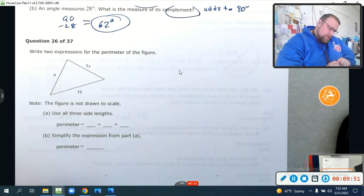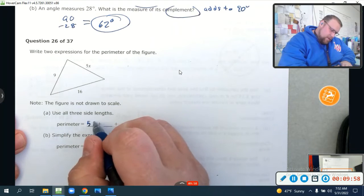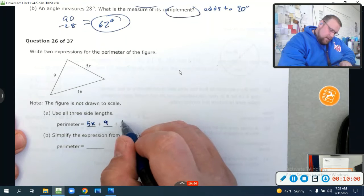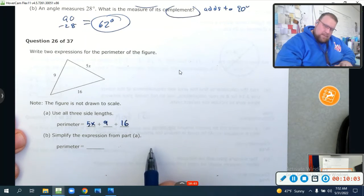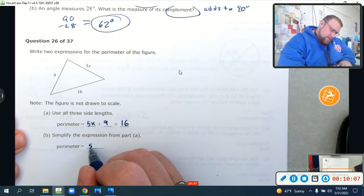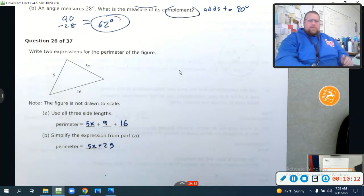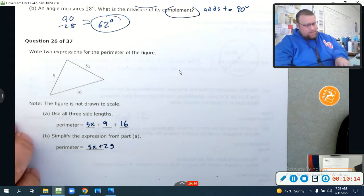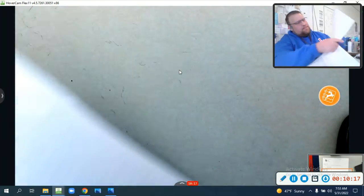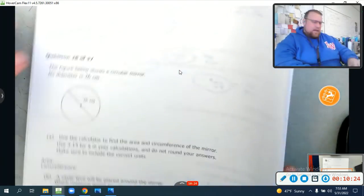Write two expressions for the perimeter of the figure. So, first of all, the perimeter is going to be 5X plus 9 plus 16. I just add up all the sides. And then I'm going to simplify it. When I simplify it, 9 plus 16 is 25, so this is 5X plus 25. That's all it means by two expressions. There are two different expressions. One simplified. It's a little bit longer of a section. I think we are about done with it. It's just a lot. It's a big section. We went through a lot of stuff. I want to make sure and review it.